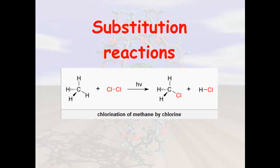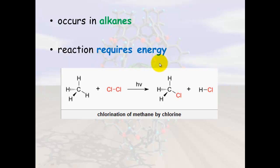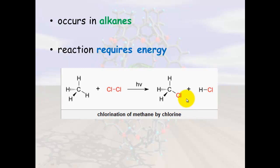Substitution reactions are another type of reaction common with alkanes — they occur in alkanes only and require energy. What happens is one of the hydrogen atoms is replaced with another atom. For example, chlorine is reacted with methane: one hydrogen is lost and replaced by chlorine, with HCl forming on the other side.